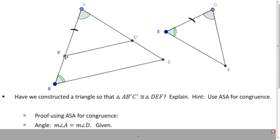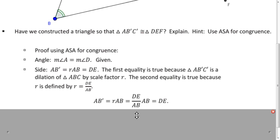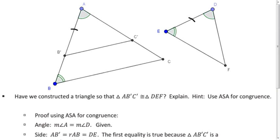Well, we found AB prime by multiplying the length of AB by the scale factor. When we do that, we multiply by the scale factor. It's going to end up that the ABs cancel, and we just end up with DE. So, AB prime is equal to DE. And then, why are angles AB prime C prime and angle E congruent? Why are these the same?